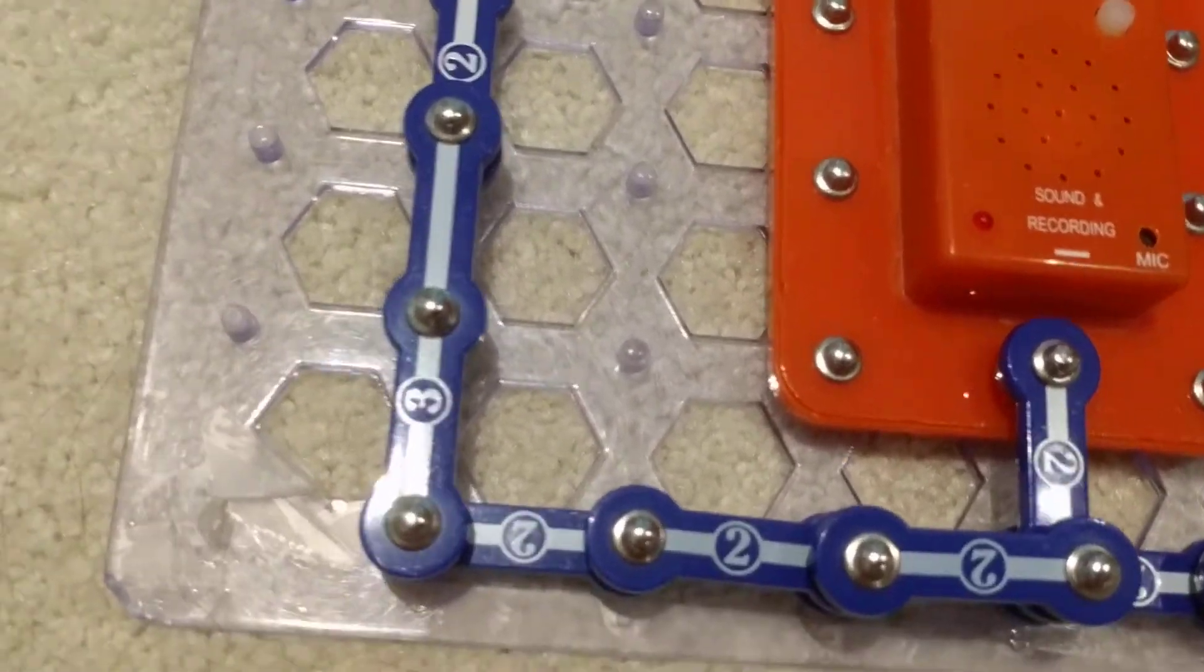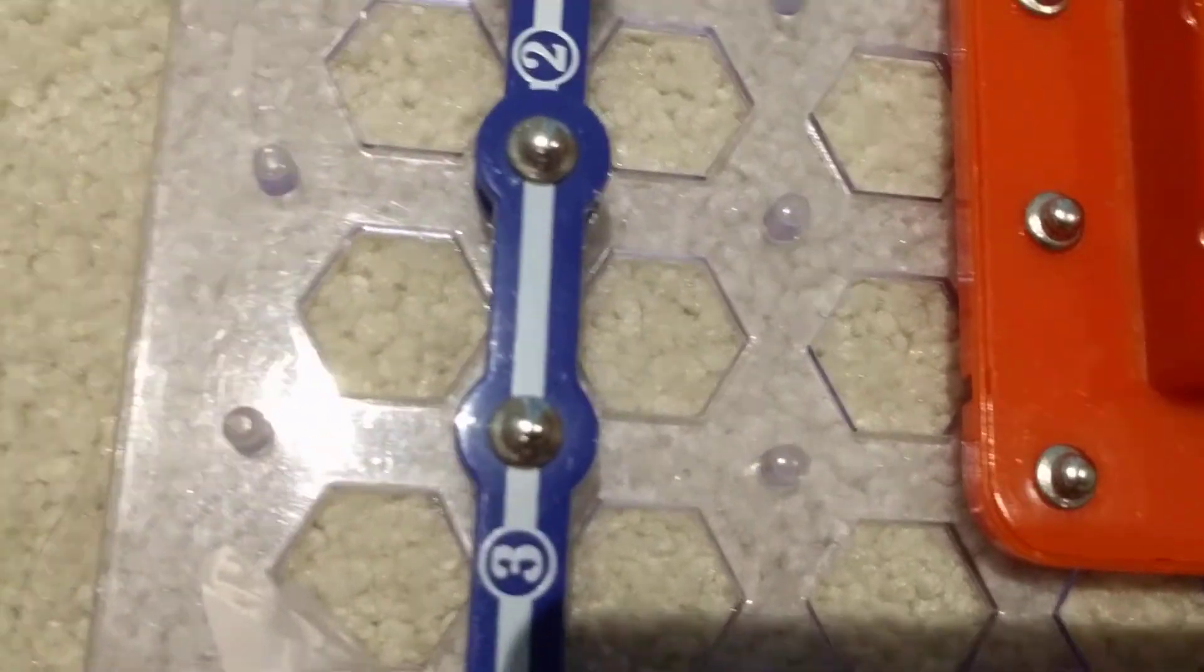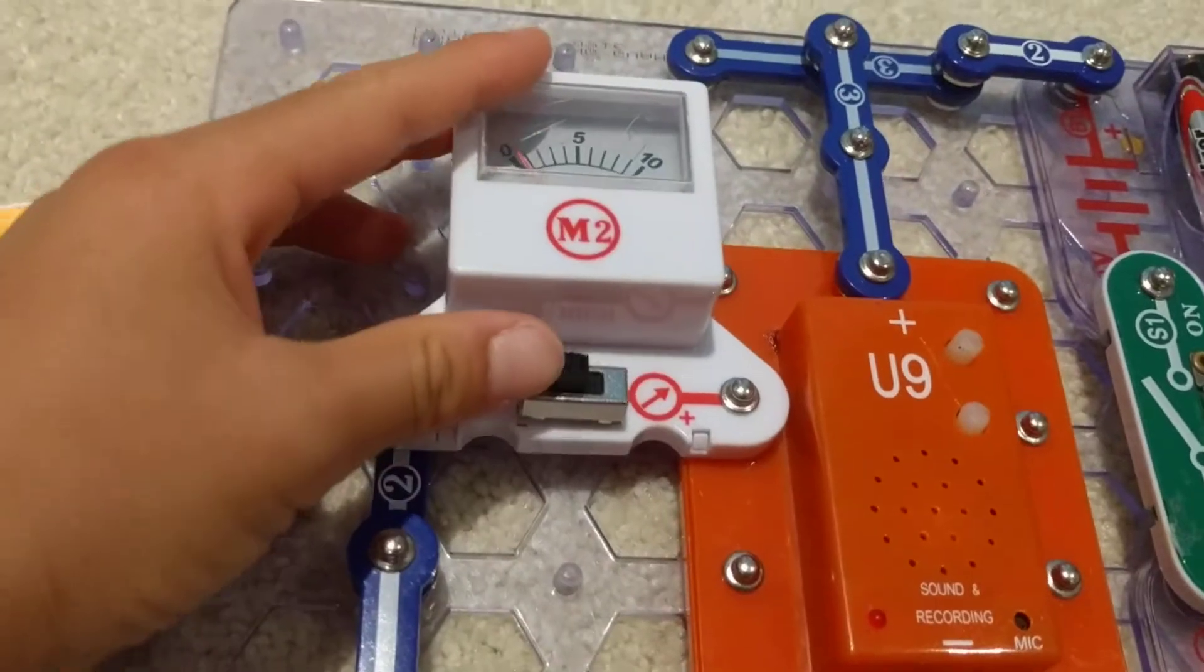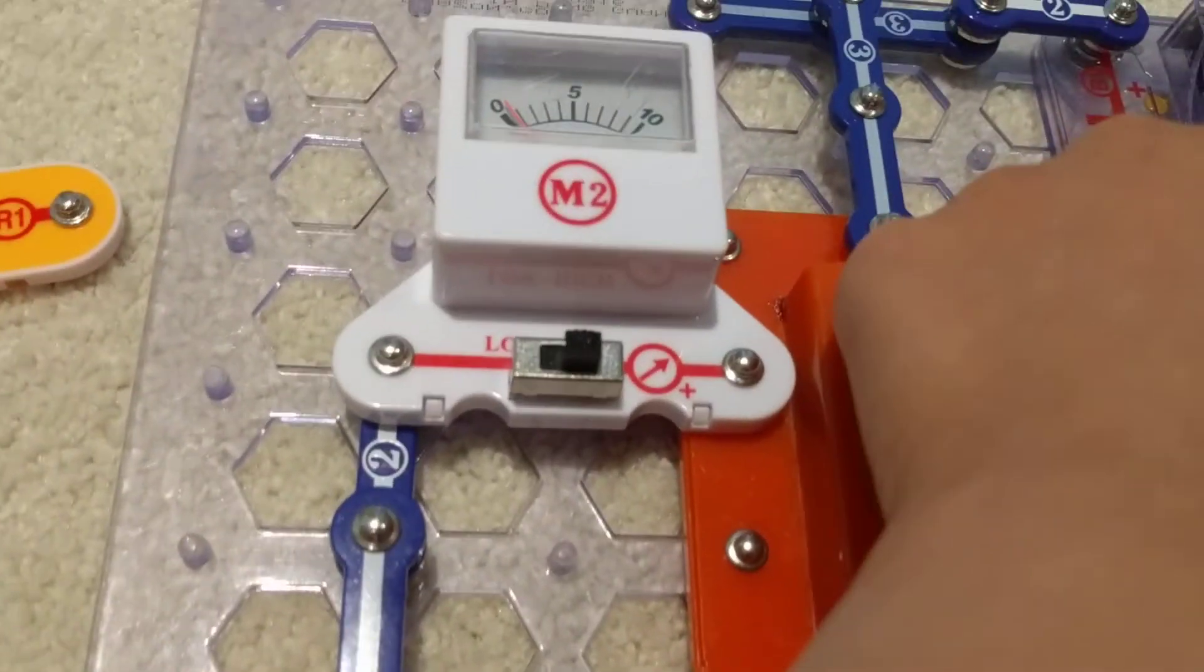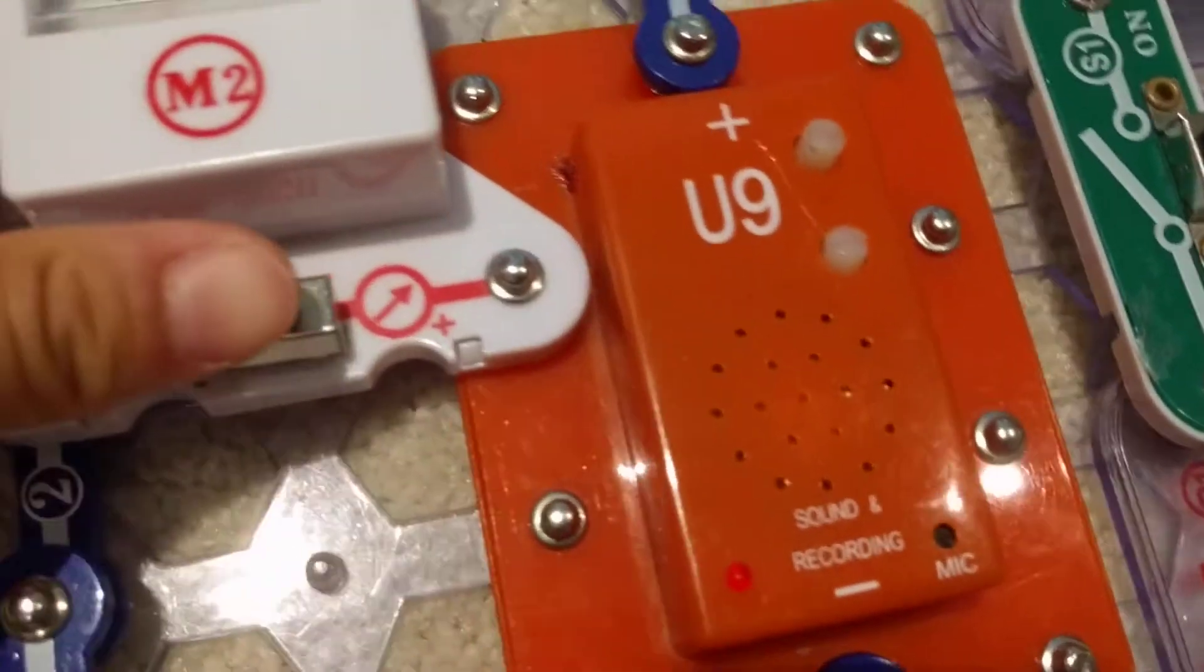So now we're going to be trying to use this M2 meter. We're going to set it to high. See it's not making any sound. When you turn it to low it doesn't make any sound either.